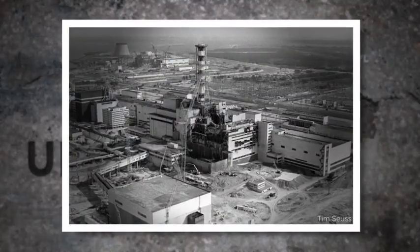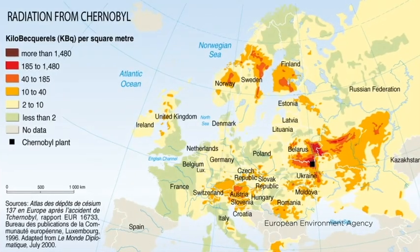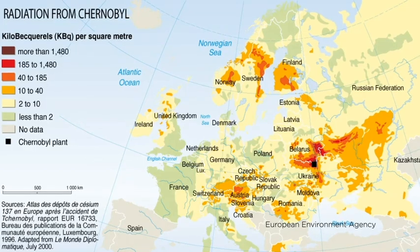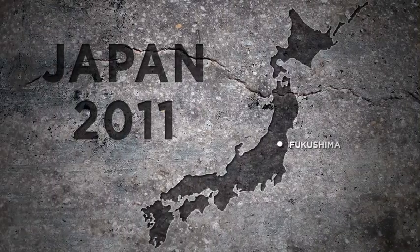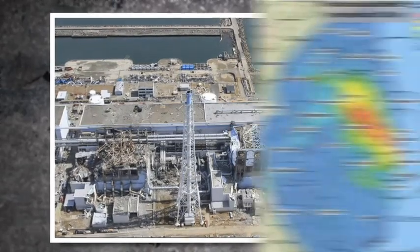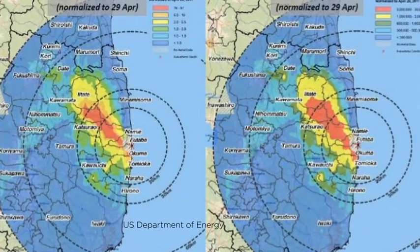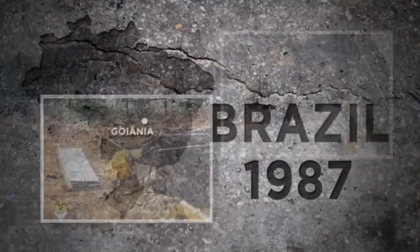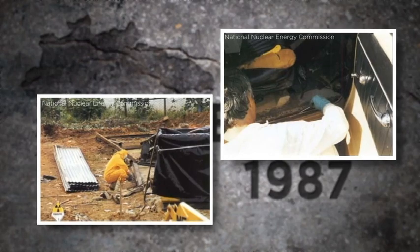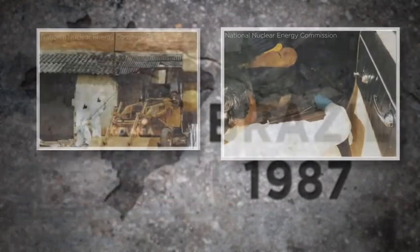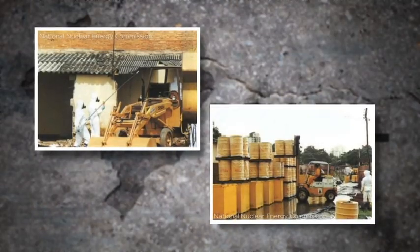There have been some notable radiological incidents in the past that have added contamination to our environment. The worst incident to date was the Chernobyl nuclear power plant meltdown in 1986. The resulting fire spread contamination across many parts of Eastern Europe and elsewhere. On a smaller scale, the meltdown at the Fukushima Daiichi Nuclear Power Station in 2011 spread contamination across a large part of northern Japan. Another notable accident occurred in Goiânia, Brazil in 1987, when two people collecting scrap metal found and opened a canister containing cesium-137 from an abandoned cancer therapy clinic.